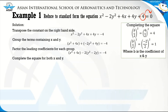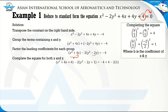We use the pattern (b/2)² to find what to add. For the first group, b equals 4, so (4/2)² equals 4. For the second group, b equals negative 2, so (−2/2)² equals 1. To make each group a perfect square trinomial, we add 4 to the x group and 1 to the y group, giving: x² plus 4x plus 4 minus 2(y² minus 2y plus 1).